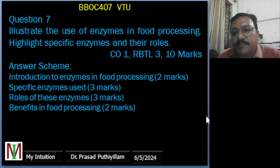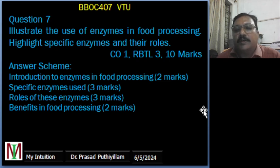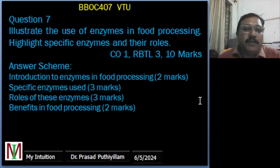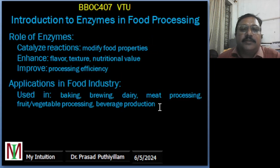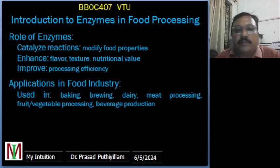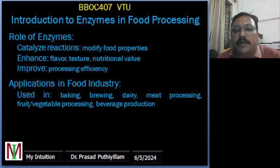The question here is to illustrate the use of enzymes in food processing and highlight specific enzymes and their roles, connected to course outcome 1 at RBTE level 3, for 10 marks. The mark distribution: introduction of enzyme in food processing is 2 marks, specific enzymes used is 3 marks, role of these enzymes is 3 marks, and benefits in food processing is 2 marks. Understanding this concept is very easy, so you can easily score whether the question is asked for 5 marks, 3 marks, or 10 marks, by expanding on what I am giving in these slides. The slides will be provided as a PDF in the description box for you to download as a reference.